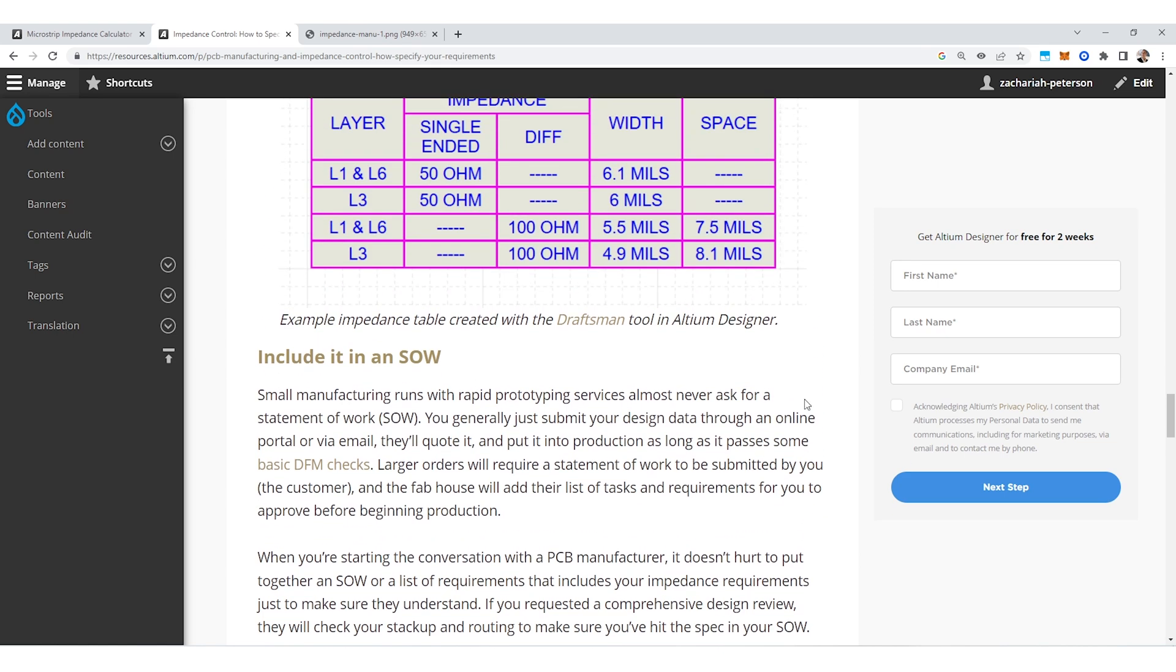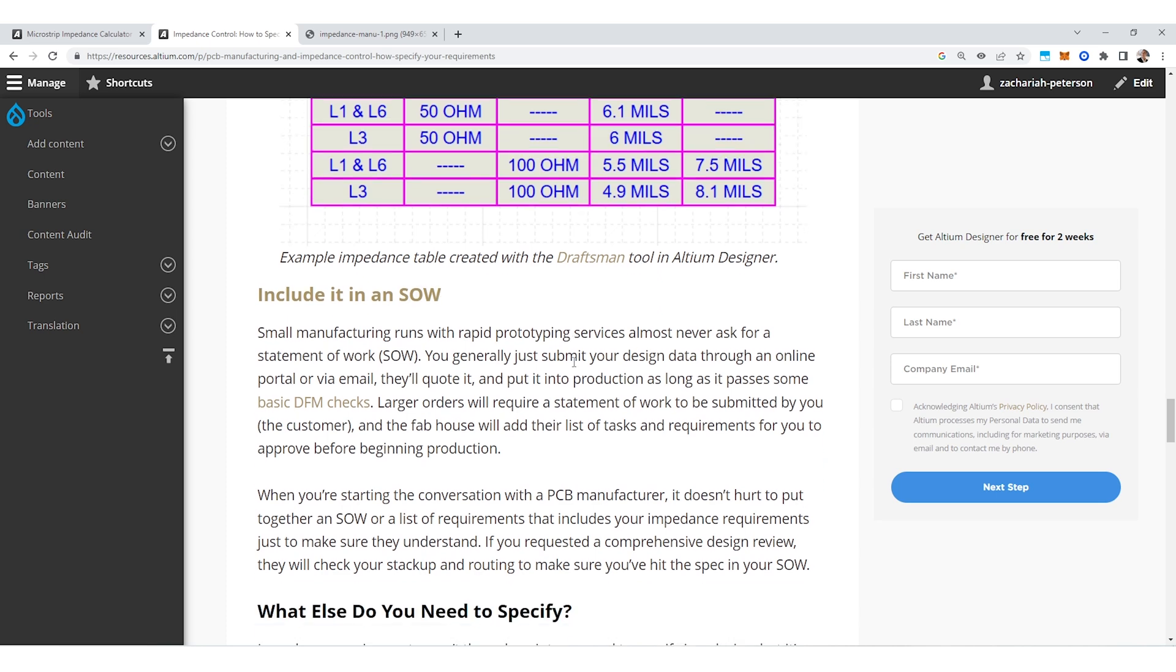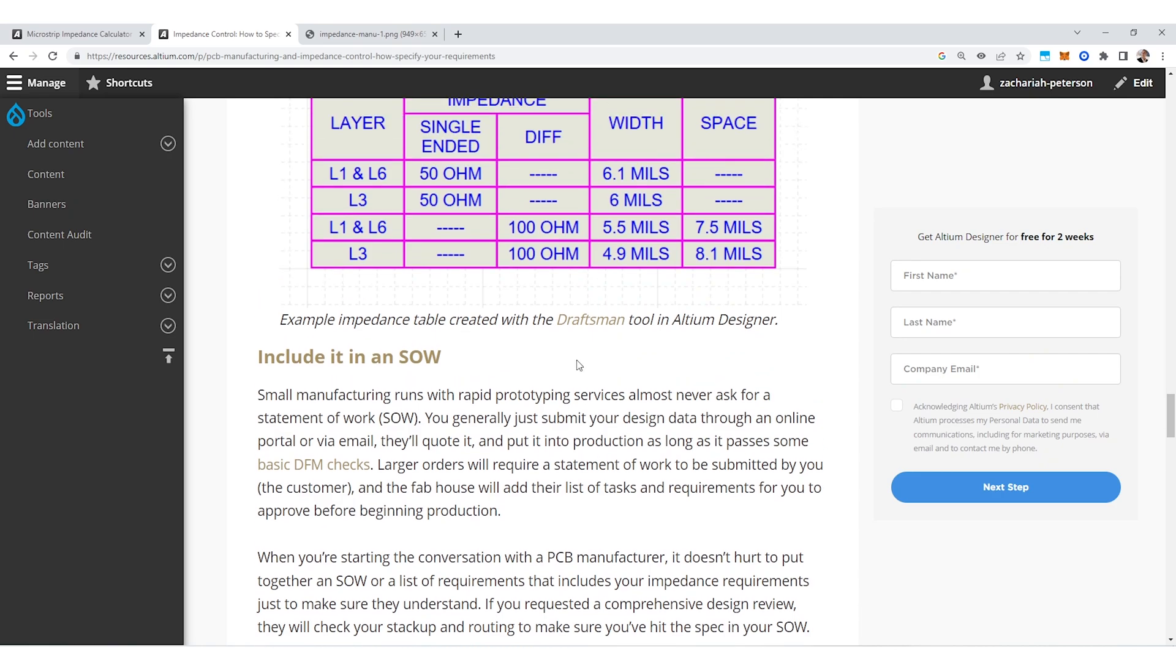The last thing that you can do and for higher volume or higher value builds this is definitely something you should do is you can include it in a statement of work. So when you are doing a commercial project it is always good to develop a statement of work or a scope of work, an SOW, then they are going to refer to that whenever they have a question as far as what they need to be doing in the build.